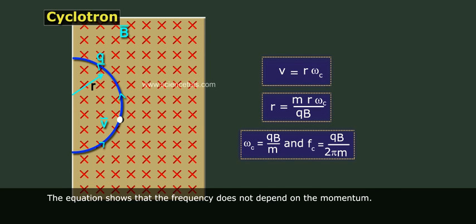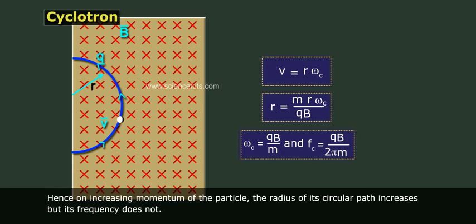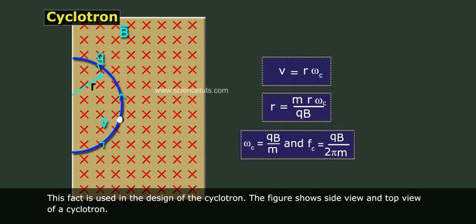The equation shows that the frequency does not depend on the momentum. Hence on increasing momentum of the particle, the radius of its circular path increases but its frequency does not. This fact is used in the design of the cyclotron.